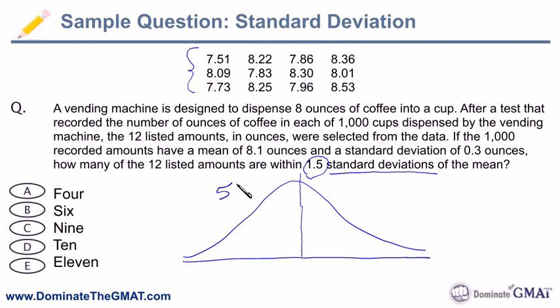In other words, 50% of the outcomes are going to be less than the mean, and 50% of the outcomes are going to be more than the mean. Now it says it's trying to dispense 8 ounces of coffee, but unfortunately it's not quite accurate, right? Because the mean, the average is 8.1 ounces. And so all that means is that 8.1 ounces is the average, it's the mean. So 50% of them are going to be less than 8.1 ounces, and 50% are going to be more than 8.1 ounces.